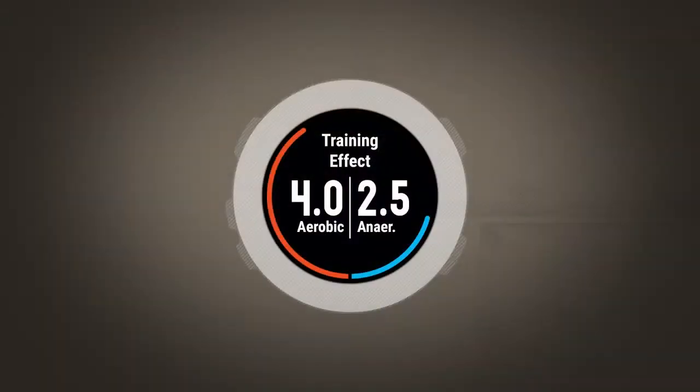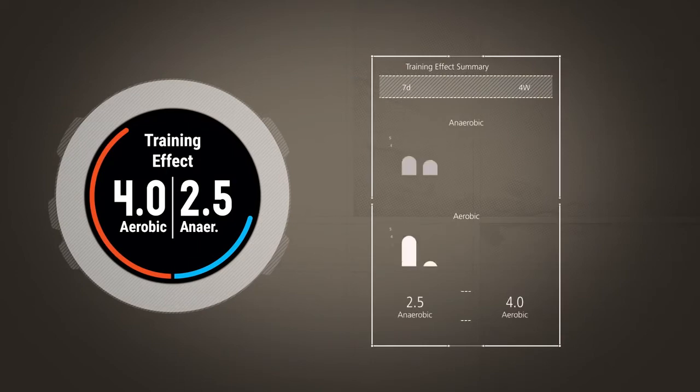On compatible products, aerobic training effect is shown on the left side of the training effect screen. Values range from 0 to 5, with 0 being no effect and 5 is overreaching. You can also view this information on Garmin Connect, along with new graphs that display your training effect history.